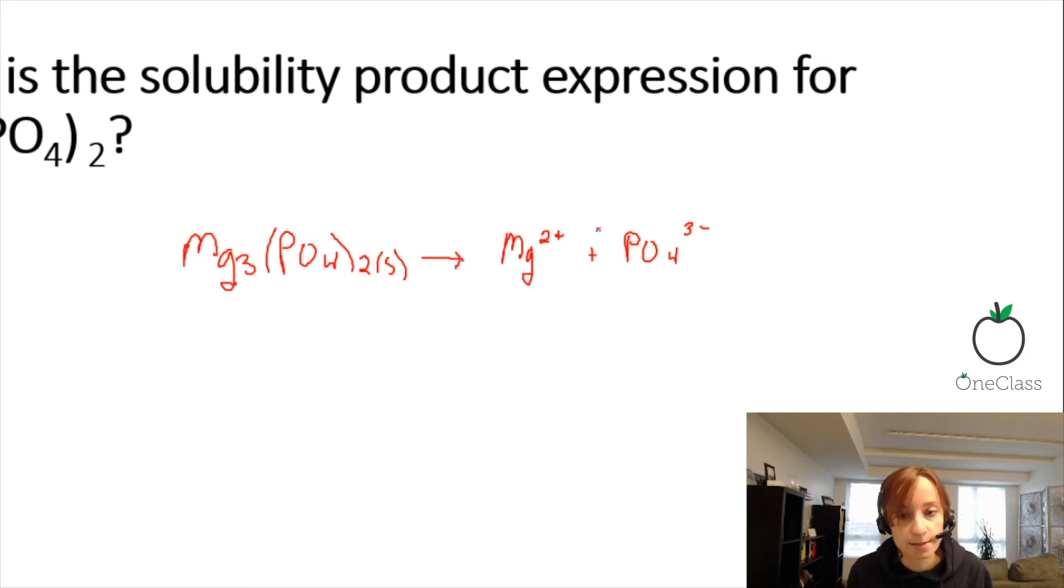We need to balance the chemical equation here. We have three magnesiums, put a three in front, and two PO₄s, so we just put a two.